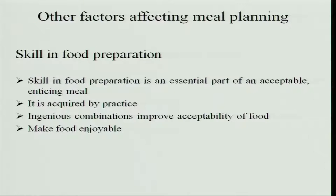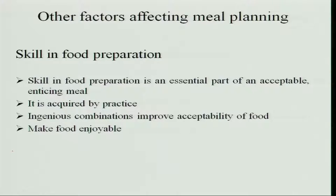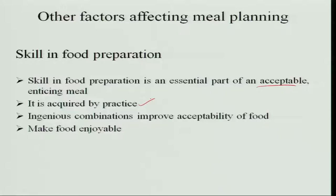One factor is skill in food preparation. We may have all nutritionally good foods and a variety of foods, but we should have a very good skill in food preparation, which is an essential part of an acceptable and enticing meal — and it requires practice. If somebody tries a food for the first time, the taste may not be as expected. Ingenious combinations of foods are very important to get a tasty recipe; otherwise it leads to a very bad taste and nobody will accept the food. When food is acceptable, it is very enjoyable.